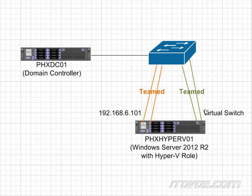Over here we have two NICs that we're going to team and use for our virtual switch, so those are going to be what our virtual machines use to communicate with external clients. What this teaming does is it allows us to use multiple NICs and have them look like one NIC, which gives us redundancy and added throughput because both NICs can be active.